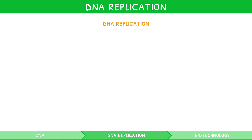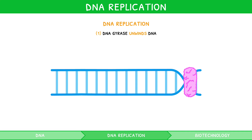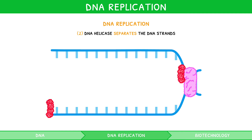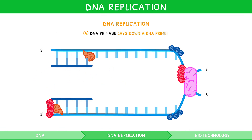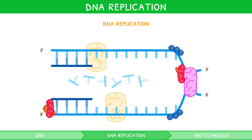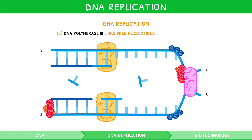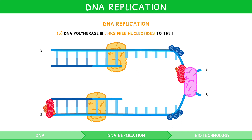DNA gyrase, a topoisomerase, unwinds the DNA. DNA helicase then separates the DNA strands by breaking hydrogen bonds between the complementary base pairs. Then, single-stranded binding proteins can keep the strands separated. The existing strands are used as templates, as DNA primase lays down RNA primer — you can think of this like scaffolding. DNA polymerase 3 then adds free nucleotides, known as nucleotide triphosphates, to the RNA primer, using complementary base pairing, in a 5' to 3' direction, i.e. it adds them to the 3' end of the RNA primer.